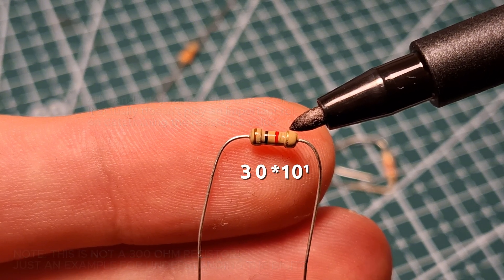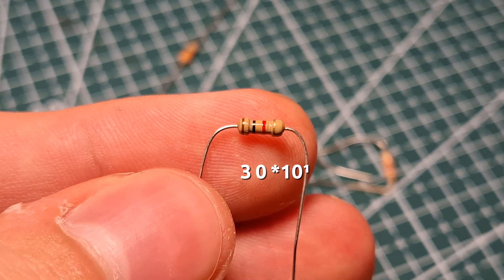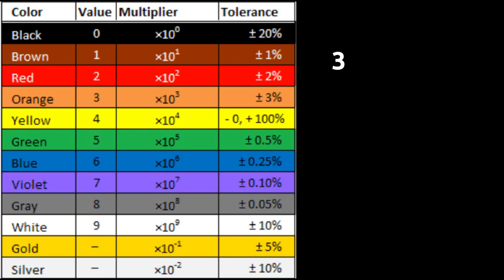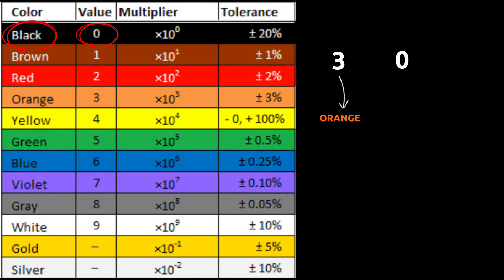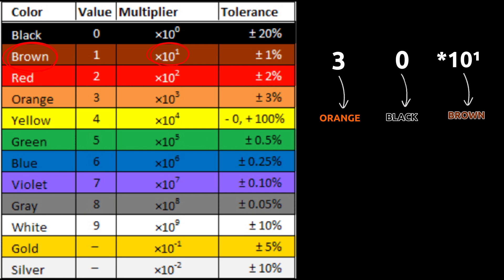Now, let's map these digits and the multiplier to their corresponding colors. The first digit is 3, and the color for 3 is orange — so the first band on the resistor is orange. The second digit is 0, and the color for 0 is black — that means the second band is black. And the multiplier is 10 to the power of 1, and the color for that is brown — so the third band is brown.